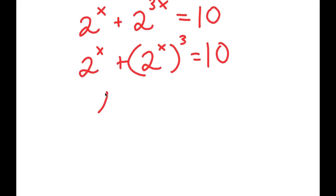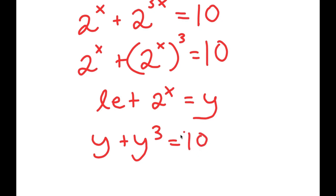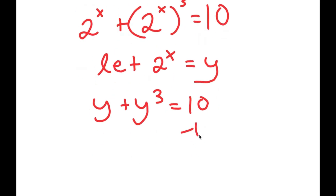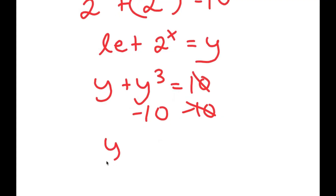I'm going to let 2 to the power of x equal the variable y. So I get y plus y to the power of 3 equals 10. Subtracting 10 from both sides, I get y to the power of 3 plus y minus 10 equals 0.